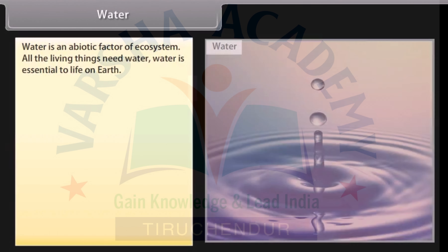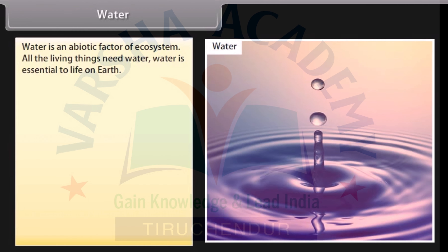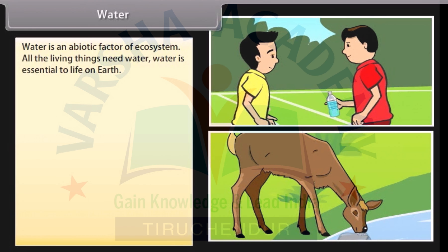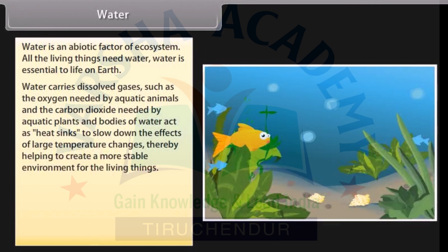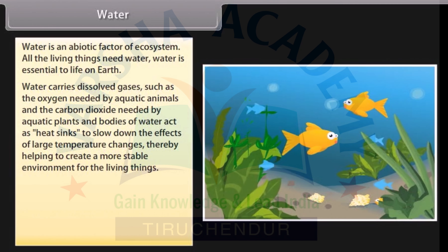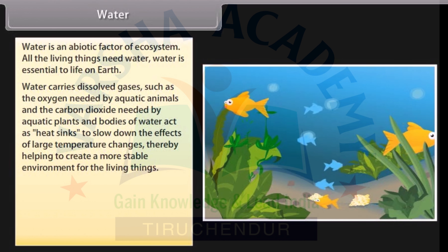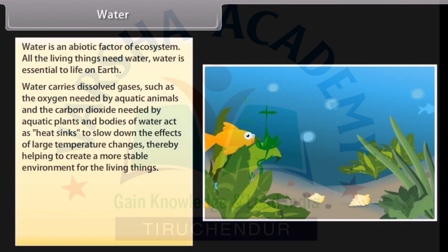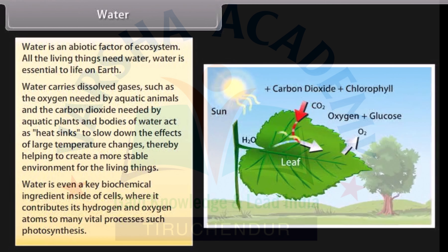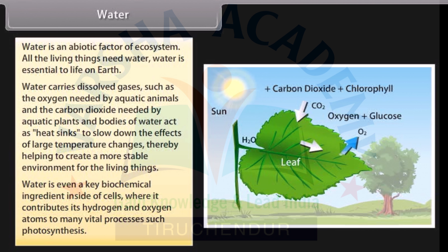Water is an abiotic factor of the ecosystem. All living things need water — it is essential to life on earth. Water carries dissolved gases such as the oxygen needed by aquatic animals and the carbon dioxide needed by aquatic plants. Bodies of water act as heat sinks to slow down the effects of large temperature changes, helping to create a more stable environment. Water is also a key biochemical ingredient inside cells, contributing hydrogen and oxygen atoms to vital processes such as photosynthesis.